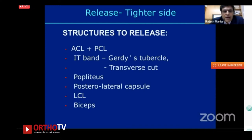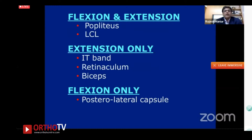If none of this works, lateral collateral ligament and biceps are addressed. I handle the lateral collateral ligament with an epicondylar osteotomy, though release at the fibular attachment is also an option. Remember Leo Whiteside's teaching: if flexion and extension are both tight, LCL and popliteus are implicated; if only extension is tight, it's the ITB, retinaculum, and biceps; if only flexion is tight, it's mainly the posterolateral capsule.